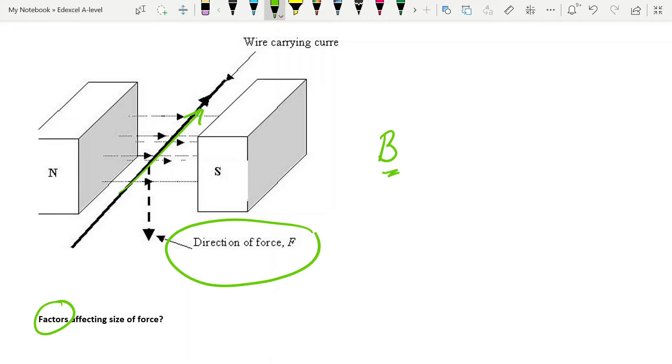And again the field around that wire depends on the size of the current. So obviously if you have greater current you're going to have a stronger field around the wire and again that's going to interact more strongly with the field of the permanent magnet.